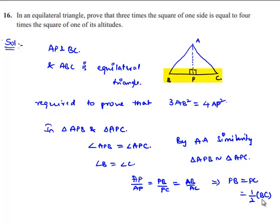In equilateral triangle as all sides are equal, we can say BC is nothing but AB. So, here we got that PB is equal to PC is equal to half times AB.